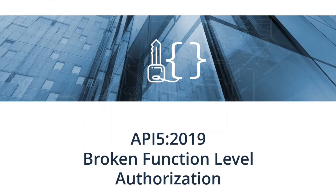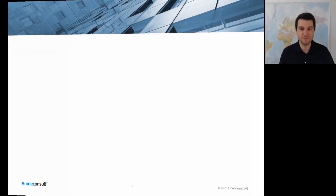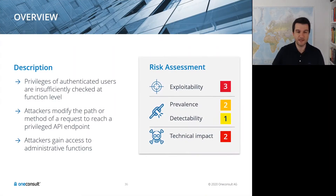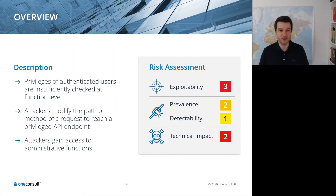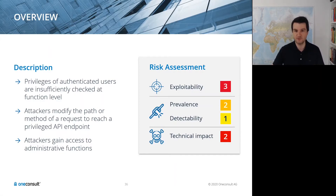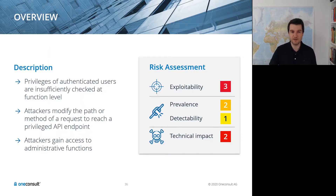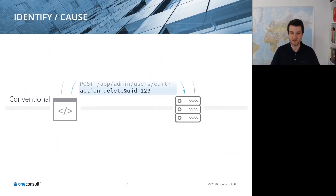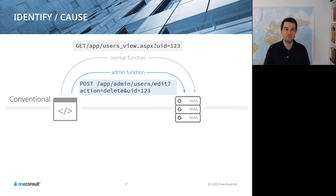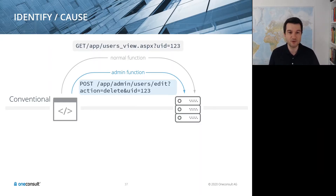Number five is broken function level authorization. This means privileges of authenticated users are insufficiently checked at the function level, in contrast to the object level discussed earlier. If an attacker can modify the path or method of a request, they may reach privileged API endpoints and gain access to administrative functions. In older development, paths like delete-user were arbitrarily complicated, but with RESTful paradigms, if an attacker sees a GET /api/user/{id} endpoint, it's easy to guess that a DELETE verb on the same path deletes the user.